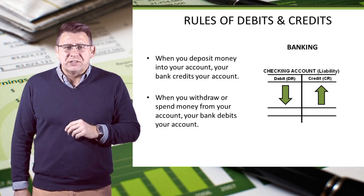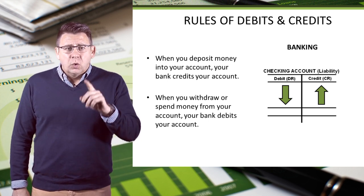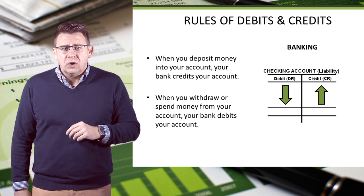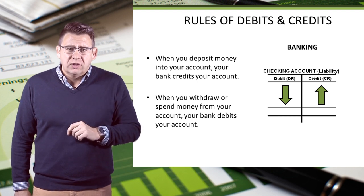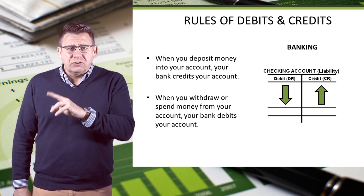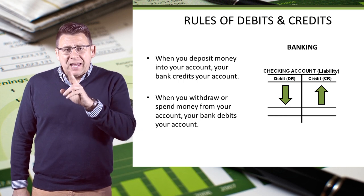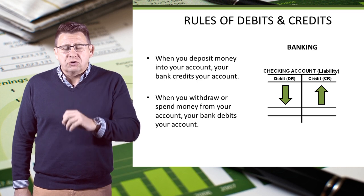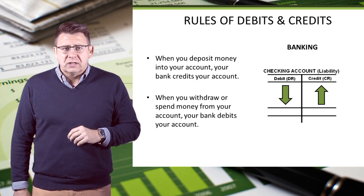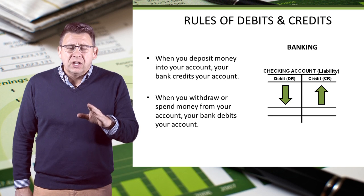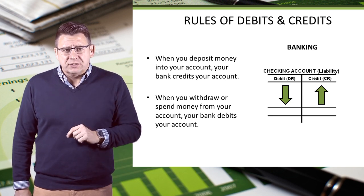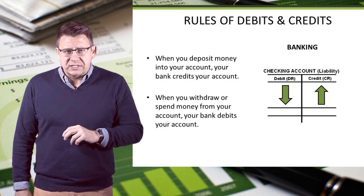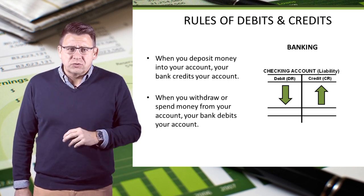Now let's see if the rules of debits and credits make sense when we think of your checking account from the bank's perspective. When you deposit money into your account, your bank credits your account — your bank's liability to you has increased, and liabilities increase with credits. When you take money out of your account or spend it, your bank debits your account — your bank's liability to you has decreased, and liabilities decrease with debits.